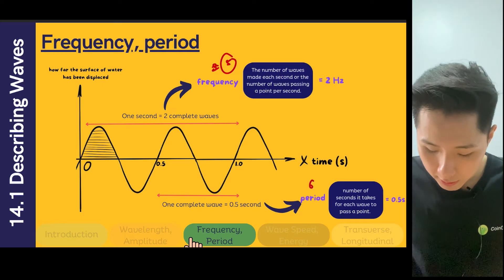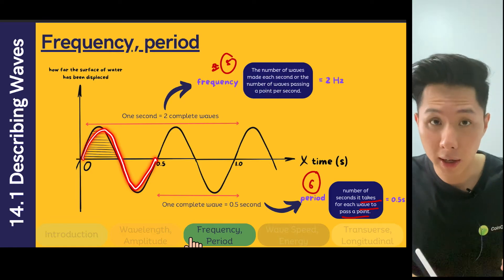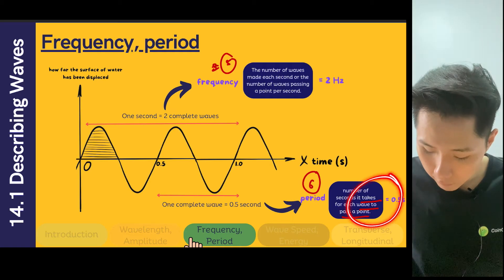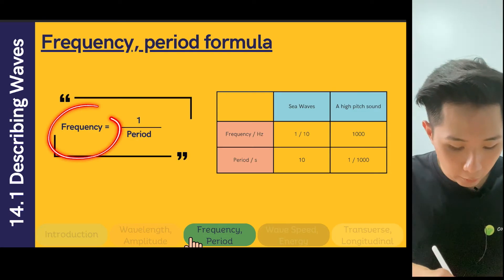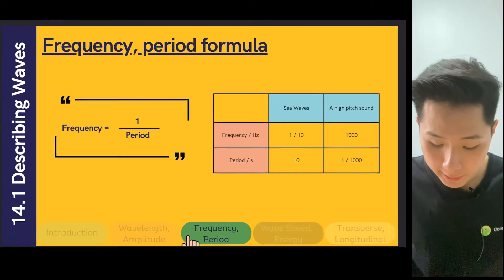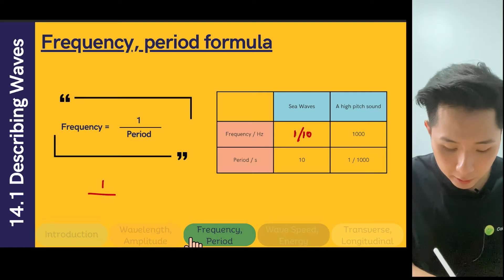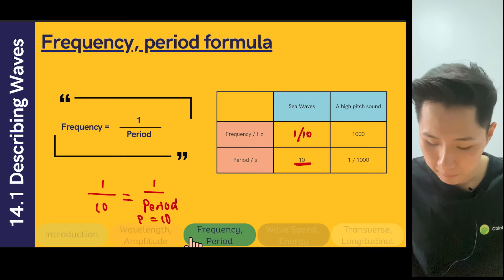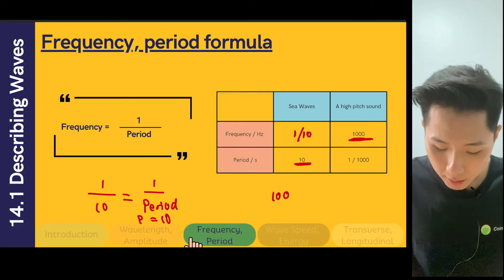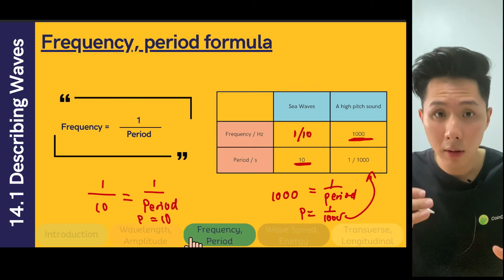The other definition is period — the number of seconds it takes for each wave to pass a point, meaning how long it takes for one wave to pass. In the example, it will be 0.5 seconds. There is a relationship between frequency and period — you can use frequency to find period and vice versa. For example, if the frequency of a wave is 1/10, you find the period using T = 1/f, giving period equal to 10. Similarly, if frequency is 1000 hertz, period will be 1/1000.